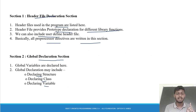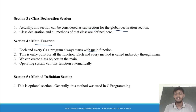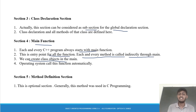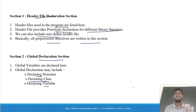So inside the global declaration section, you declare the class. The class concept we will understand in point 1.6. Each and every C++ program always starts with the main function — this is the entry point. Each and every method is called indirectly through main. We can create class and object in main. The operating system automatically calls this main function. The method definition section is optional — it is generally more widely used in C programming.